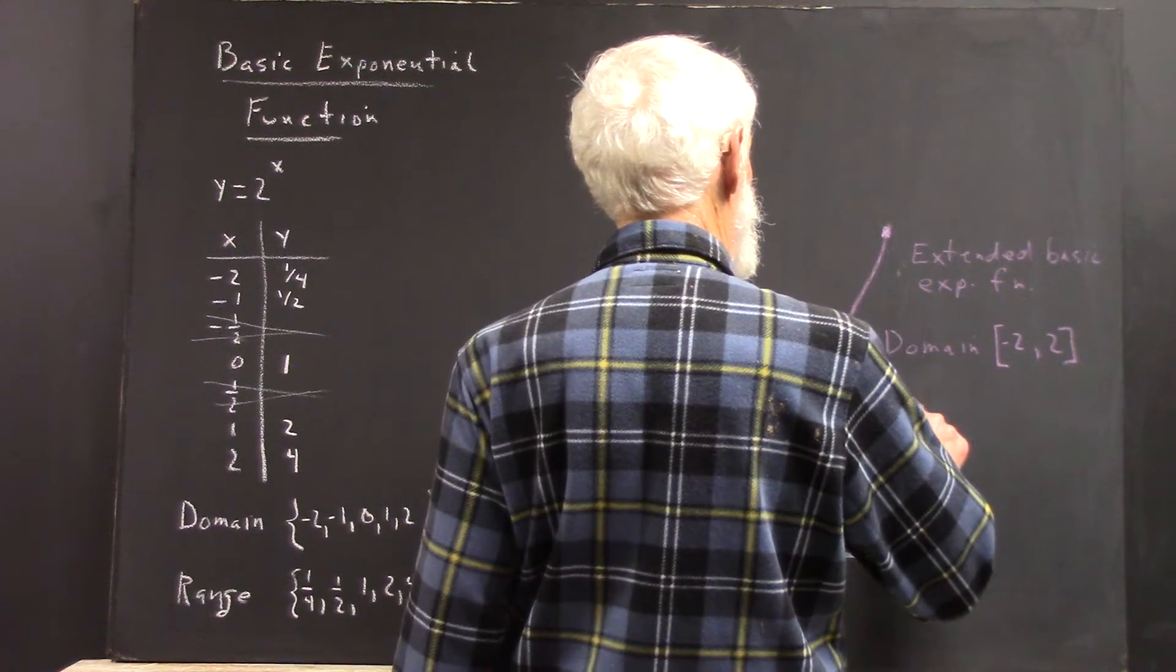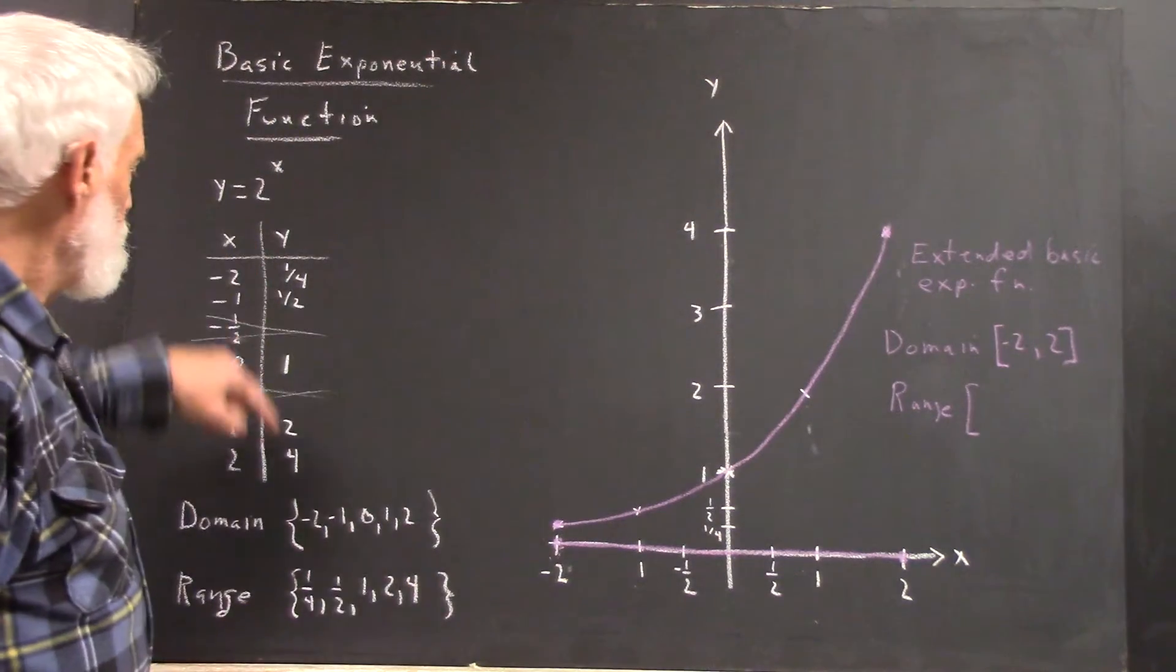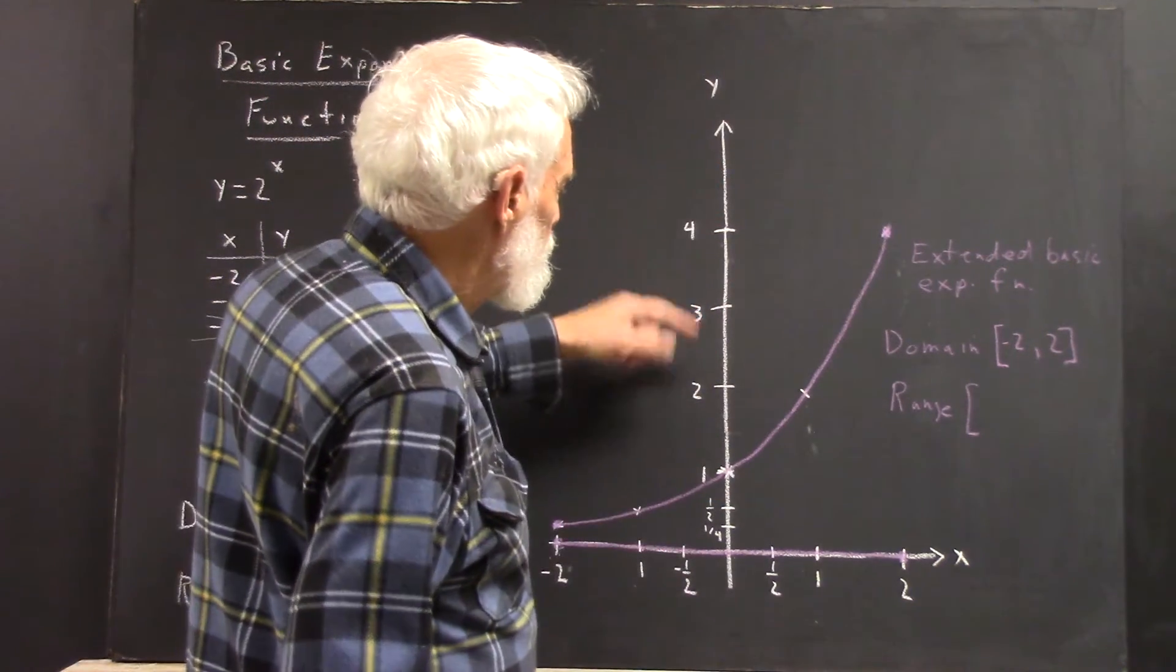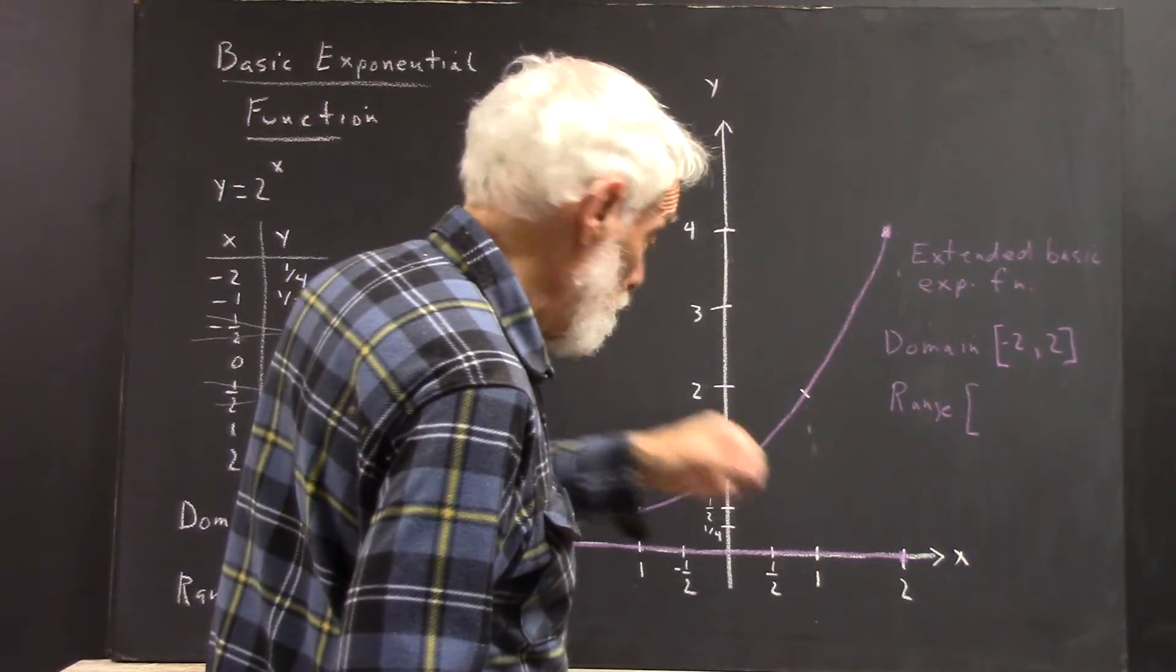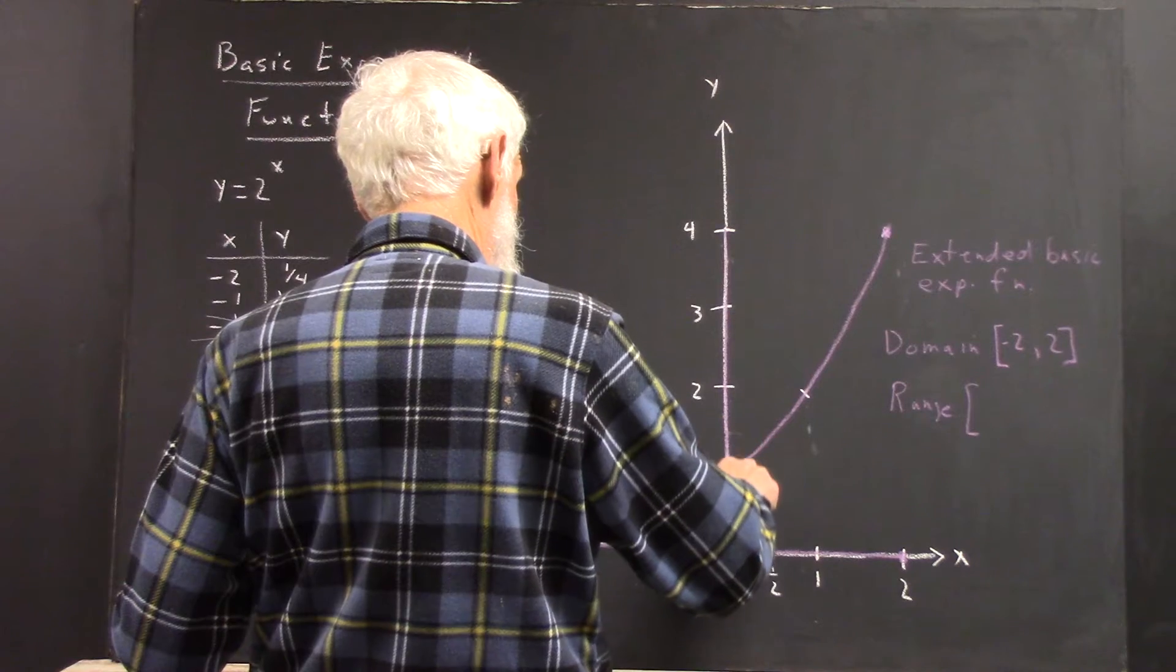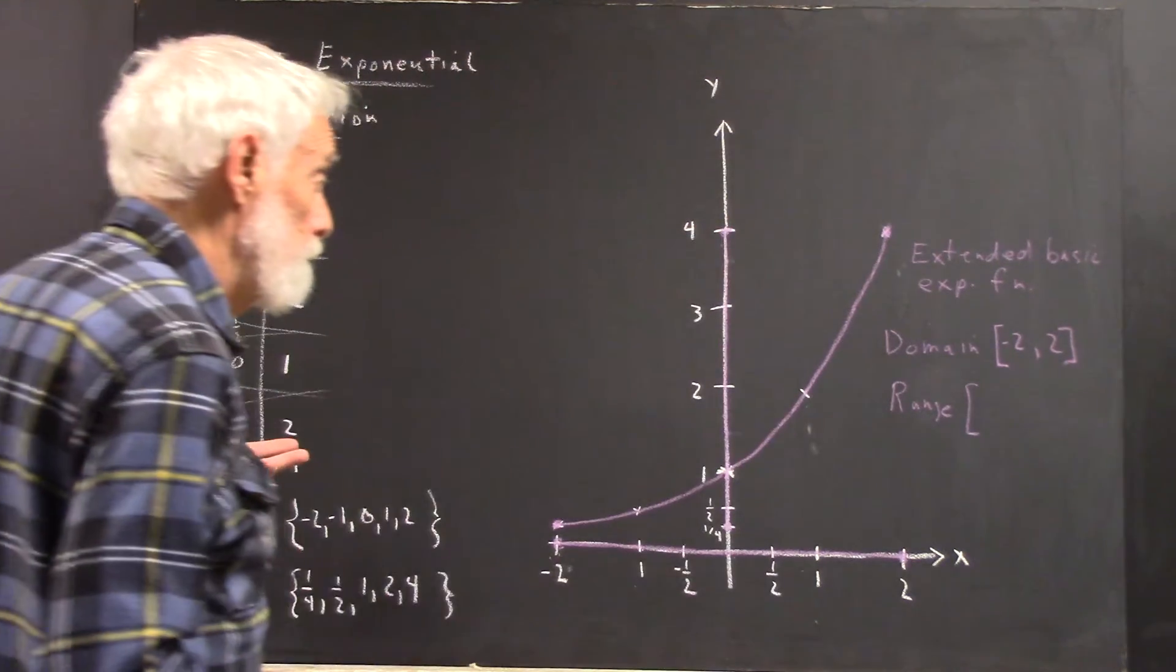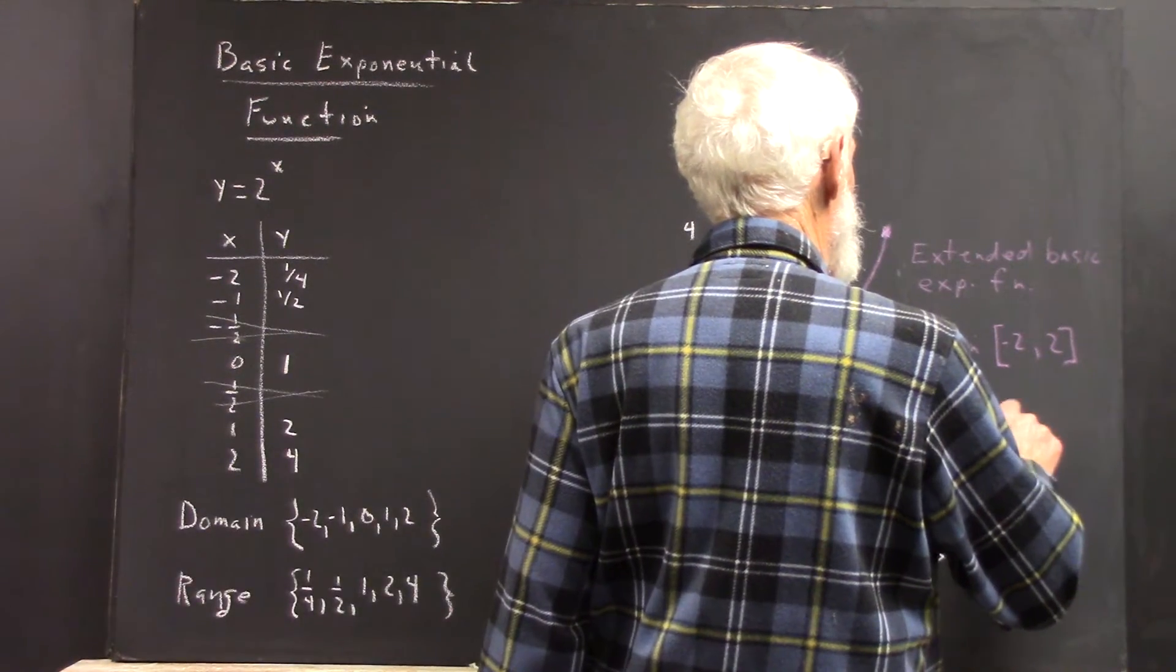The range is what? Well, the y values go from 1 fourth to 4. And since this is a continuous curve, there are no gaps in y values. Whatever y value you want between here and here, you can find a point on the graph with that y value. The range goes from 1 fourth to 4, including both 1 fourth and 4.